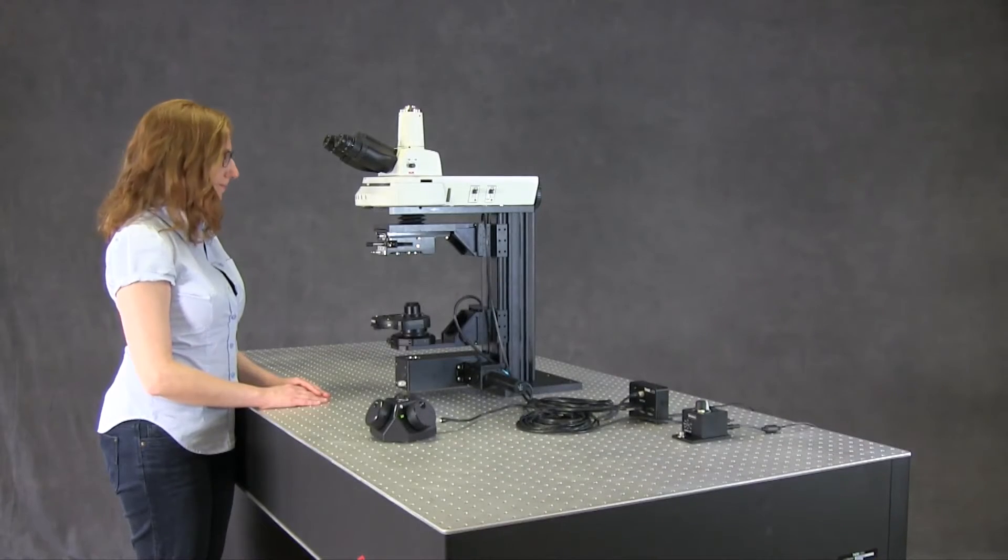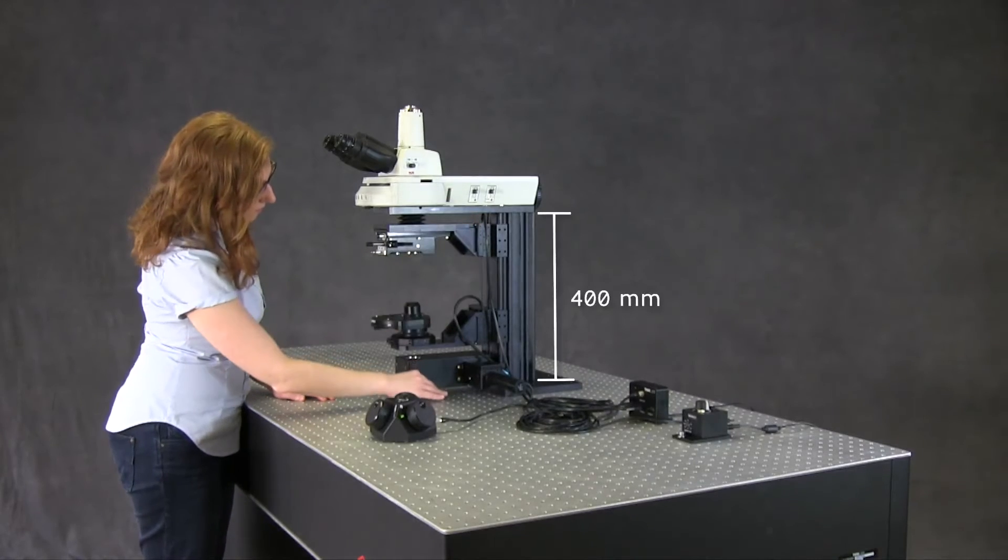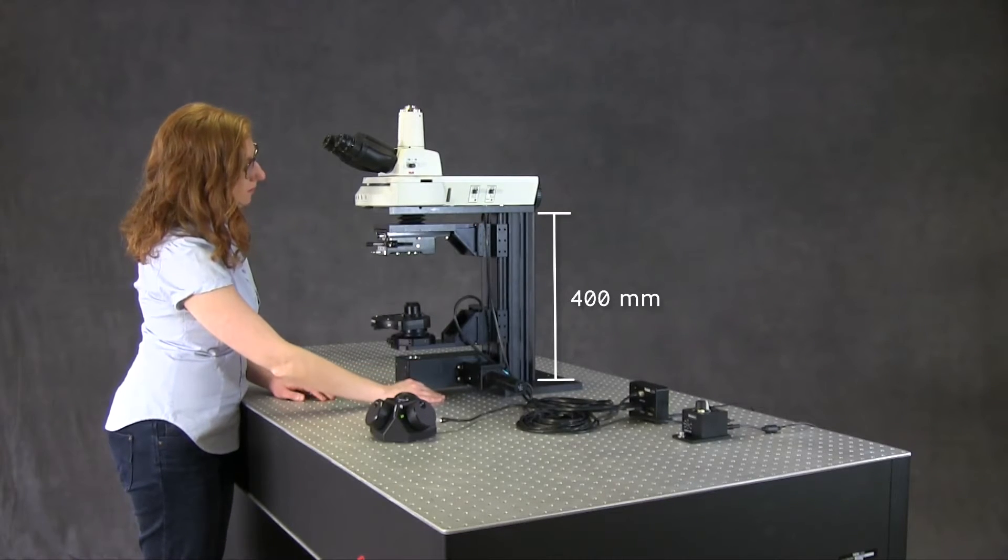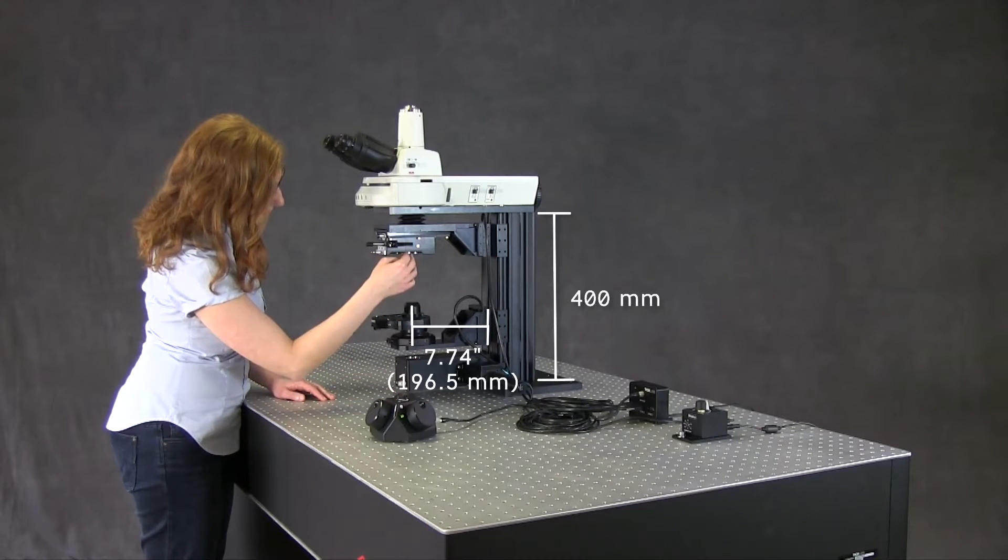To maximize the working room around the optical path, this microscope uses a 400 millimeter tall body. Like all CERNA microscopes, it also offers a 7.74 inch throat depth.